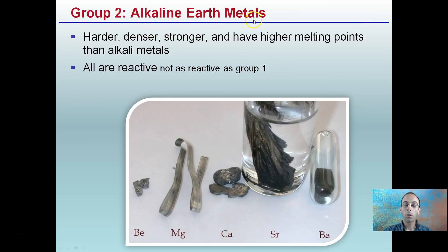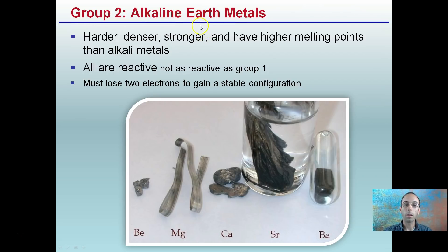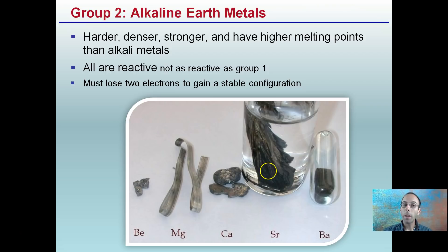Now group 2: alkaline earth metals. An easy way to remember that these are group 2 is there are two words — alkaline earth — instead of just alkali metals. Your magnesiums, your strontiums, your calciums are harder, denser, stronger, and have higher melting points than those group 1 alkali metals. They are reactive, but not quite as reactive as group 1, and they tend to lose two electrons to gain a more stable electron configuration.